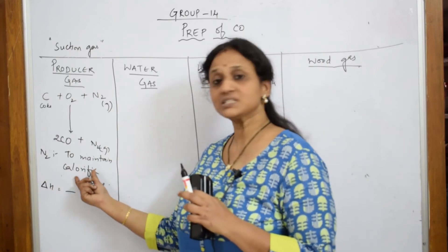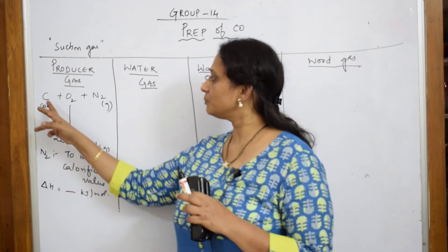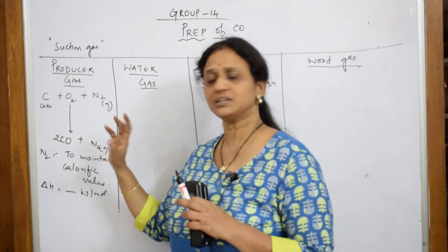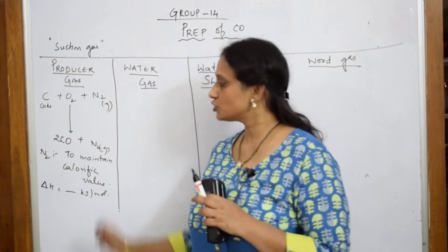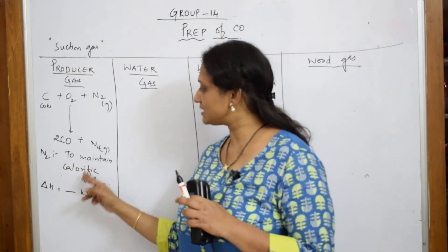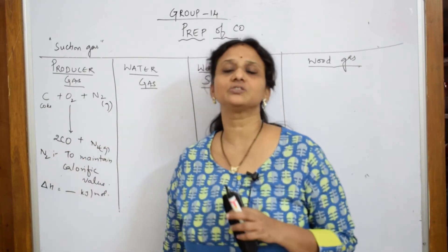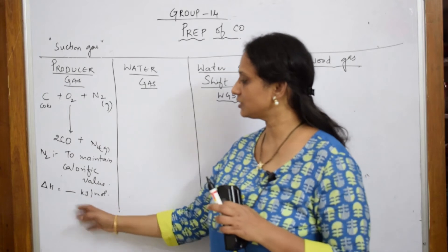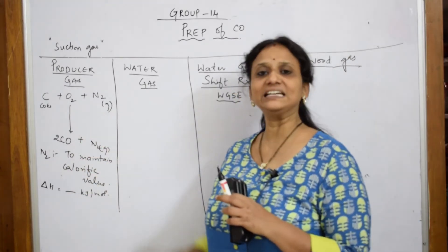Calorific value is the amount of heat produced when carbon undergoes complete combustion in the presence of oxygen. That particular calorific value is going to be maintained by this nitrogen. That means it will prevent this carbon monoxide from getting further poisoned. That is the reason we say nitrogen is used to maintain calorific value — to maintain that heat in the reaction.